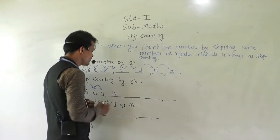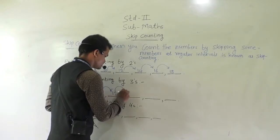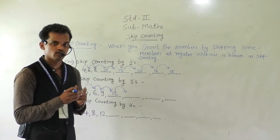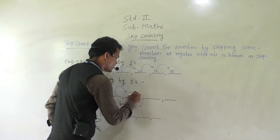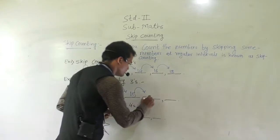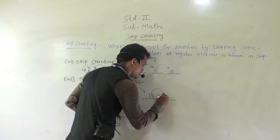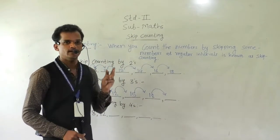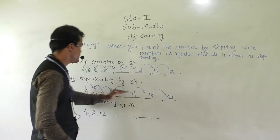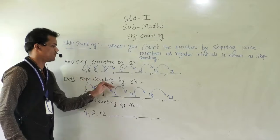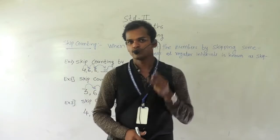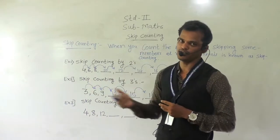Then again add 3: 12 after — 13, 14, 15. Then again add 3: 16, 17, 18. Then again add 3: 19, 20, 21 will come here. This is the example of skip counting by 3's. In this example we have skipped 3 every time and written the next numbers.